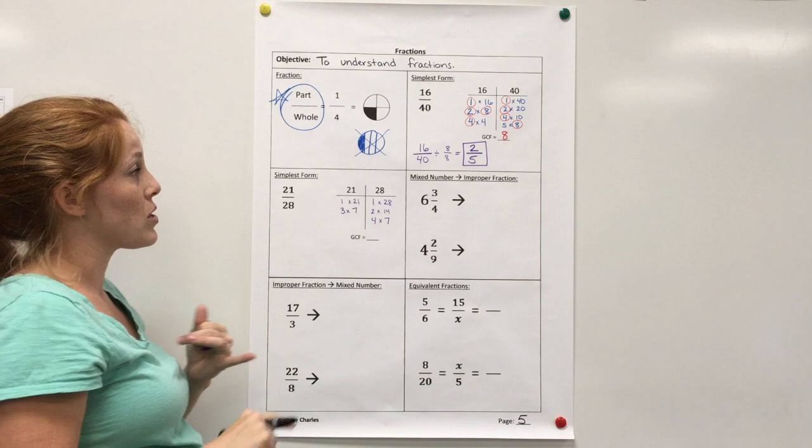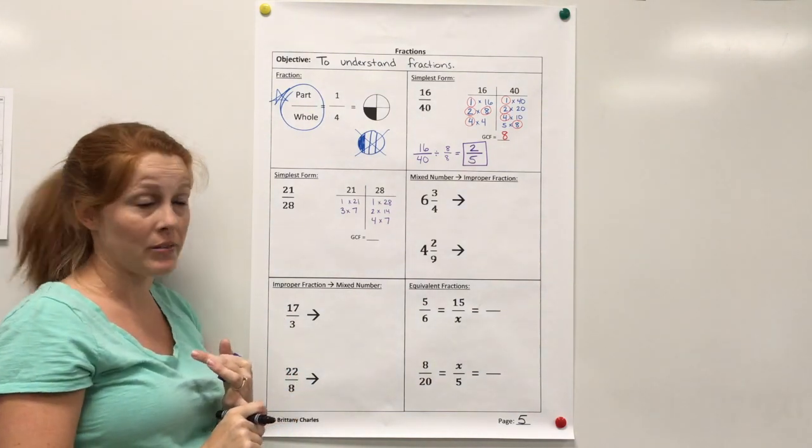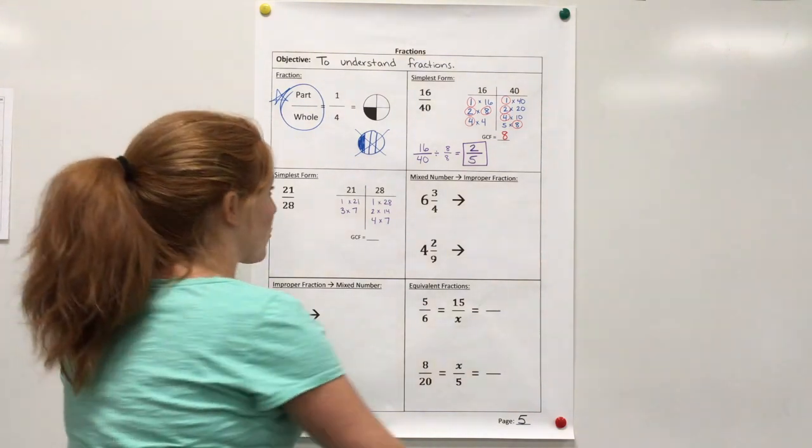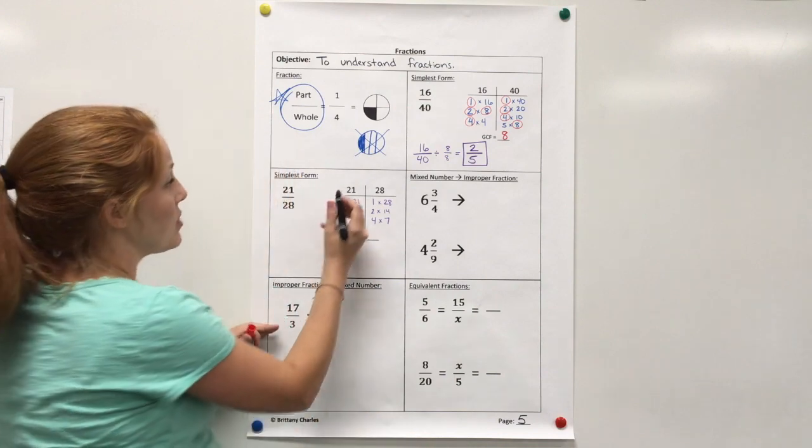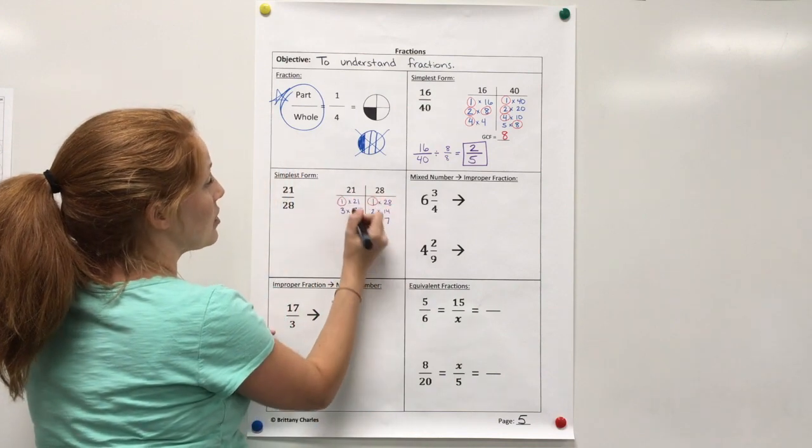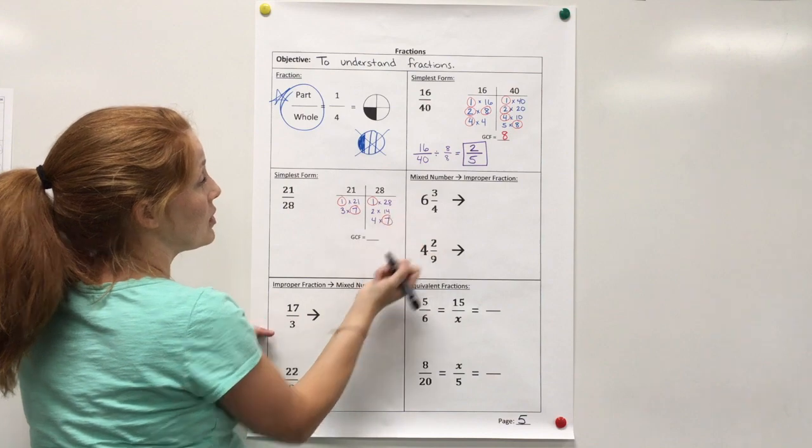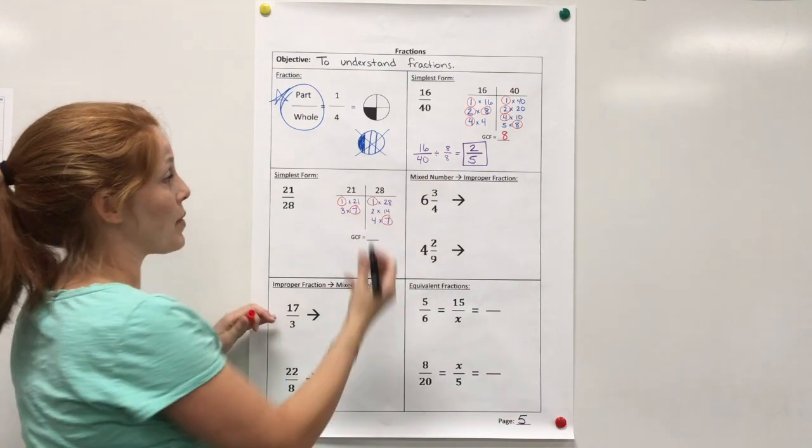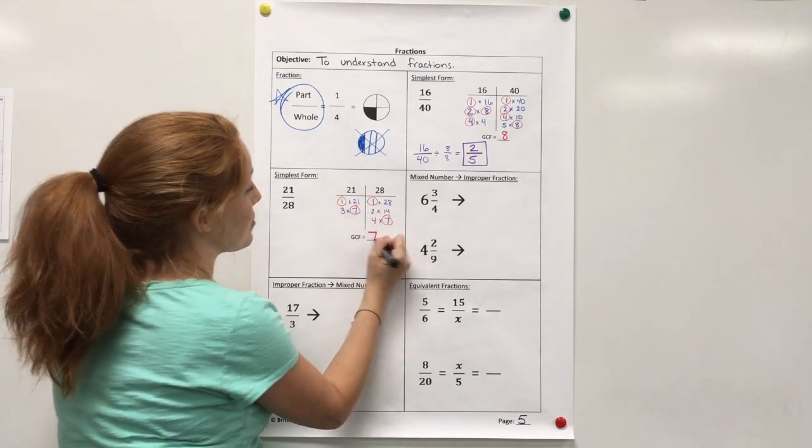5 is not going to work. 6, not going to work. So I'm done. So again, I look for what they have in common. They both have 1. They both have 7. And that's it. So my greatest common factor would be 7 because it's the largest.